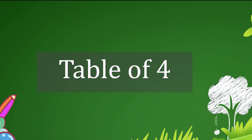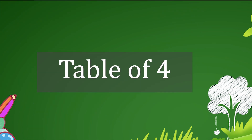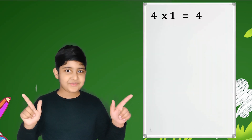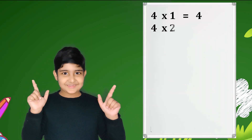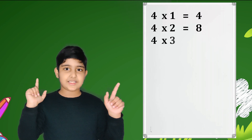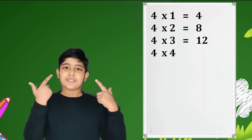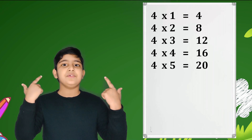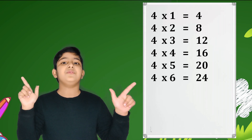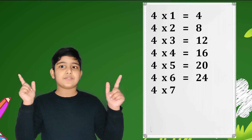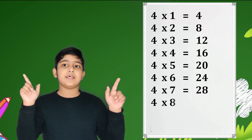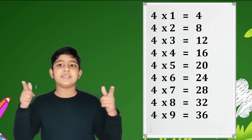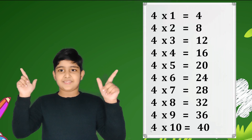4 ones are 4, 4 twos are 8, 4 threes are 12, 4 fours are 16, 4 fives are 20, 4 sixes are 24, 4 sevens are 28, 4 eights are 32, 4 nines are 36, 4 tens are 40.